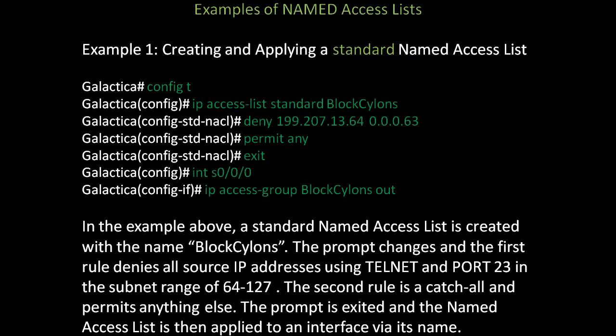In the first example, we're going to create and apply a standard named access list. From privilege mode, use config t to go to global configuration mode. Use the command ip access-list, and instead of specifying a numerical range — 1 through 99 for standard or 100 through 199 for extended — simply use the keyword standard or extended. Then give it a string value; in this case, block Cylons. Once done, notice the prompt will change to configure standard named access list. It's easier because you don't have to keep typing the same ip access-list number — the prompt changes and you can just put your rules in.